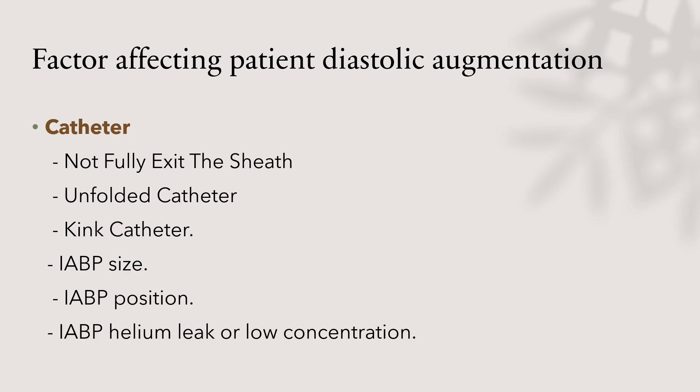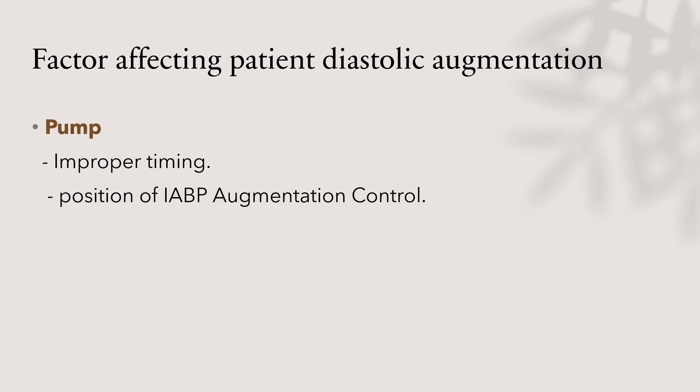Catheter factors include not fully exiting the sheath, unfolded catheter, kinked catheter, the intra-aortic balloon size being very small for the patient, improper position, presence of a helium leak or low concentration of helium inside the cylinder. Pump means improper timing or the augmentation control is not proper for the patient.